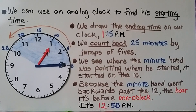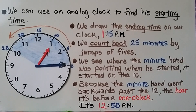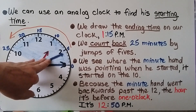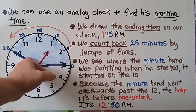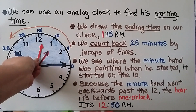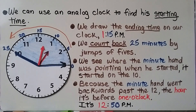We can use an analog clock to find his starting time. We draw the ending time — 1:15 p.m. — on our clock and count back 25 minutes by jumps of five to see where the minute hand was pointing when he started. Counting back by fives — 5, 10, 15, 20, 25 — the minute hand moves back to the 10. The hour hand goes back too. Because the minute hand went back past the 12, the hour shifts to between the 12 and 1, so it's before 1 o'clock — it's now 12.